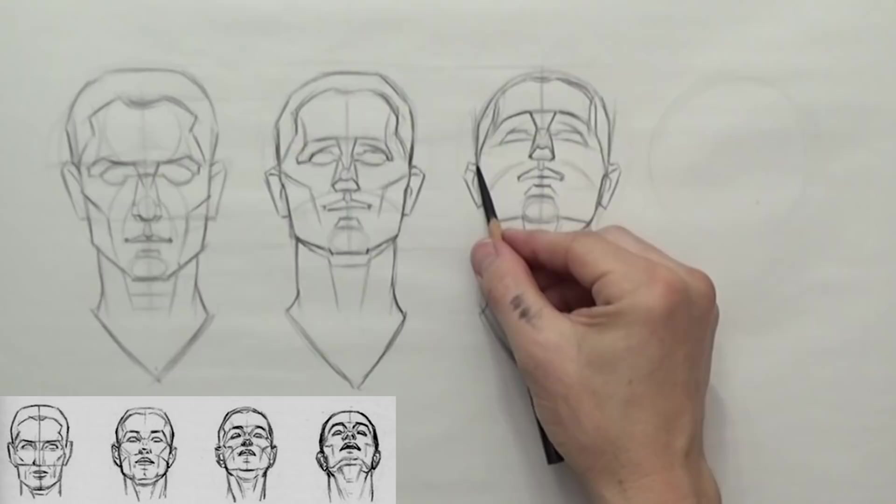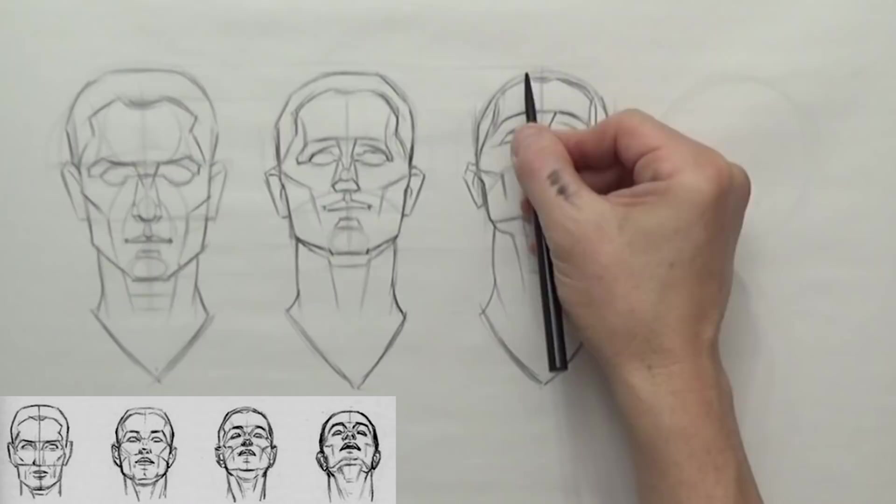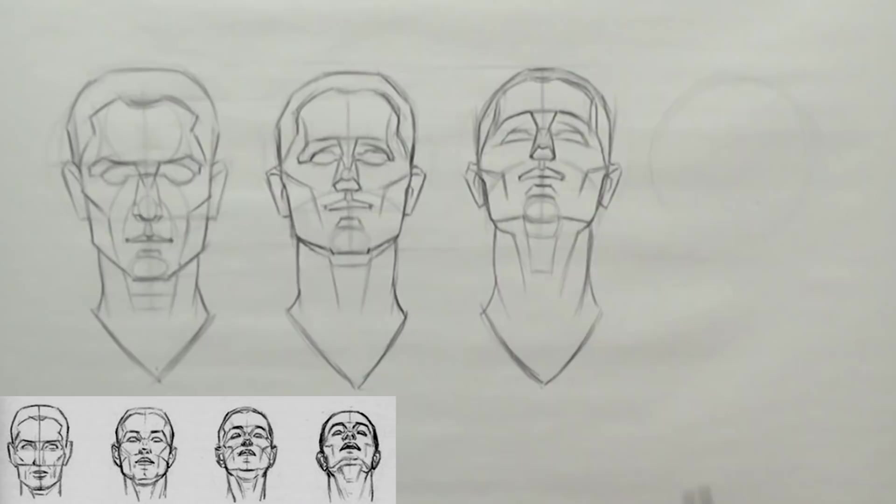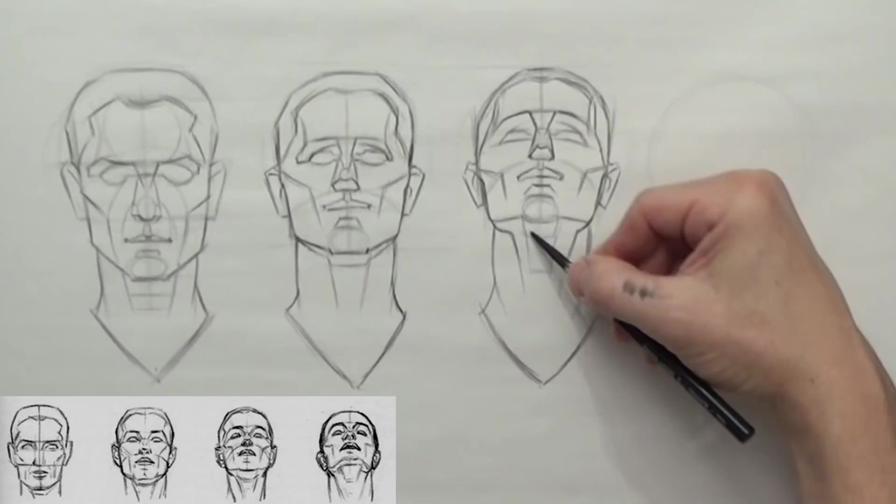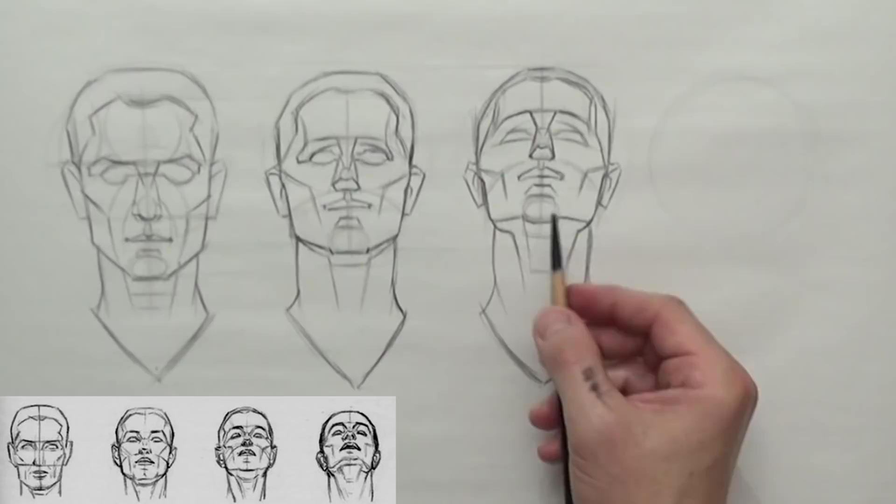I'm going to indicate the cheek a little bit more. Let's put the hair in. My pencil is getting a little dull, so I'll probably have to grab another one for the next head here. You can see how it's starting to change in perspective as he's looking up.